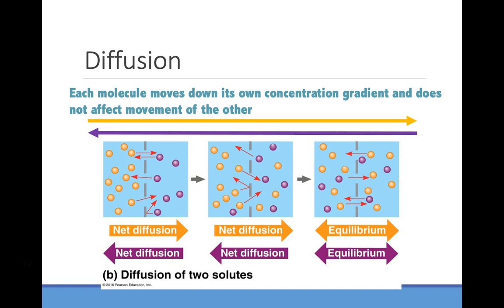Remember that each molecule moves independently along its own concentration gradient. If we add a purple molecule, that yellow molecule is still going to move from the left side — the high concentration — down to the right side where the yellow is in low concentration, until it reaches chemical equilibrium. The purple dye moves independently, from where it was more highly concentrated on the right, across that membrane to the left, until it reaches its own chemical equilibrium.